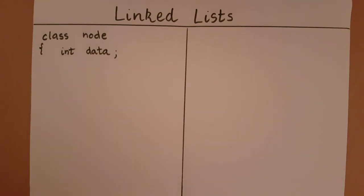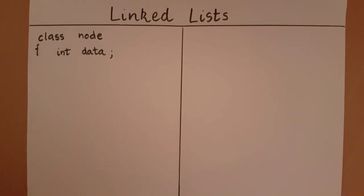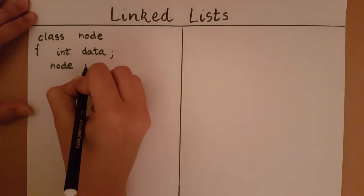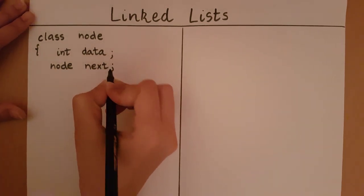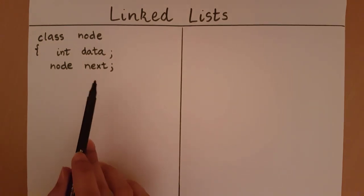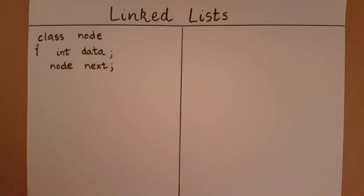The next thing a node contains is an address. We must see what this address points to — it is the address of yet another node. We can represent this by creating a node object. When I create an object of node type, say the name is 'next', whenever I reference it with respect to its name, it means I am talking about the address of that object.